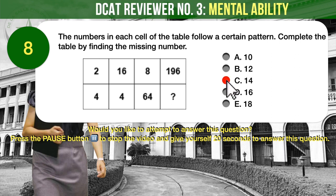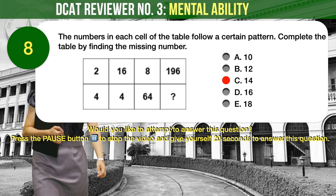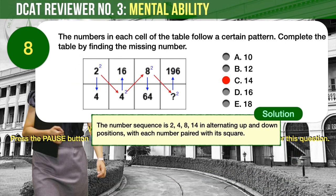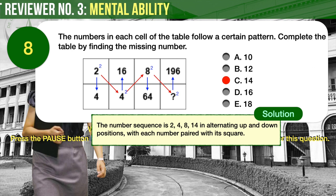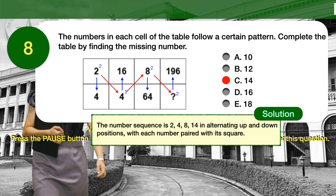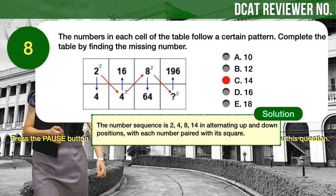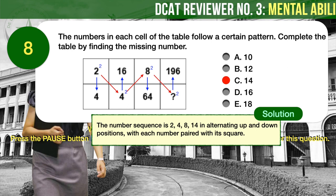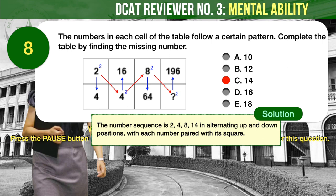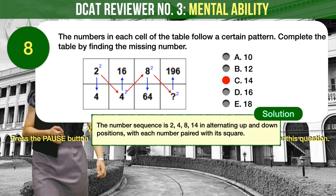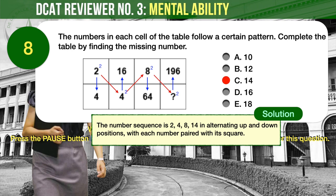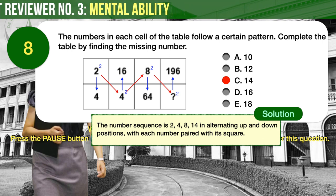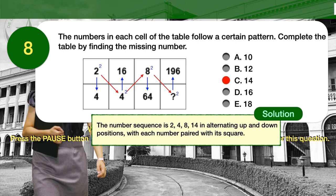The correct answer is C — the missing number is 14. The number sequence is 2, 4, 8, and 14 in alternating up and down positions, with each number paired with its square: 2 squared is 4, 4 squared is 16, 8 squared is 64. The missing number, when squared, must equal 196, and the square root of 196 is 14. Therefore, the missing number is 14.